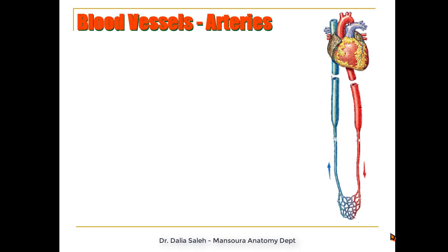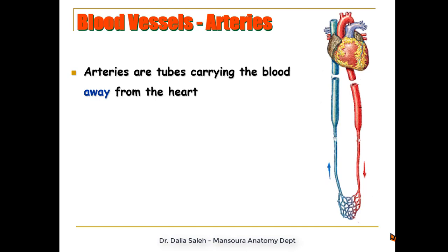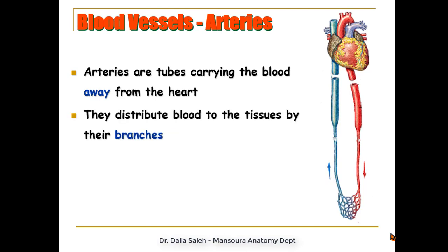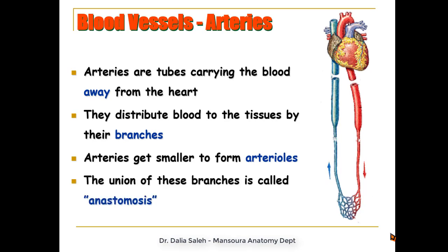Comparing the vessels within the cardiovascular system: arteries are tubes that carry blood away from the heart, distributing blood to tissues through their branches. The arteries get smaller and smaller to form arterioles. The union between these branches is called anastomosis.